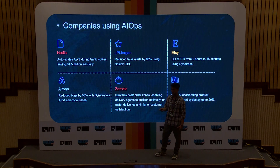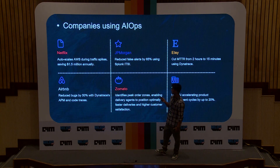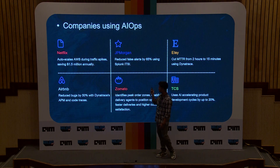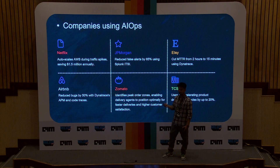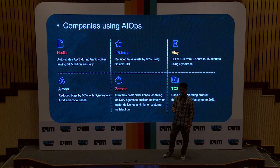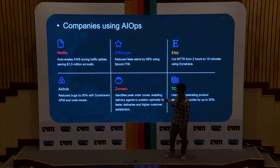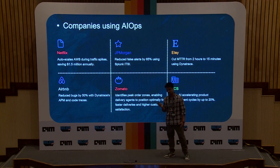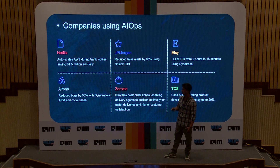Next is JP Morgan. JP Morgan uses Splunk — a very popular observability tool — to reduce false alerts. This is a very common problem where companies get a lot of alerts and spend more time on them than creating their product. This is a common use case of how you can reduce alerts using AIOps. Splunk is one example, but there are many more tools we'll look at in the next slides.